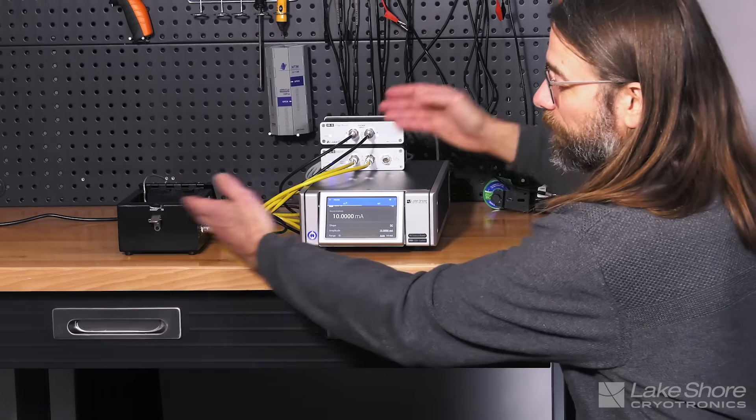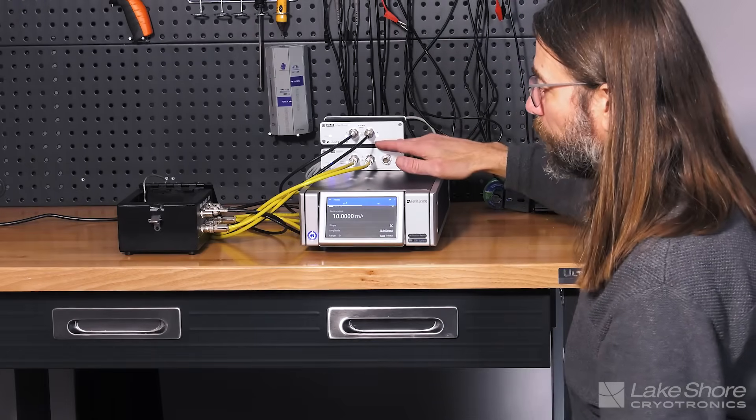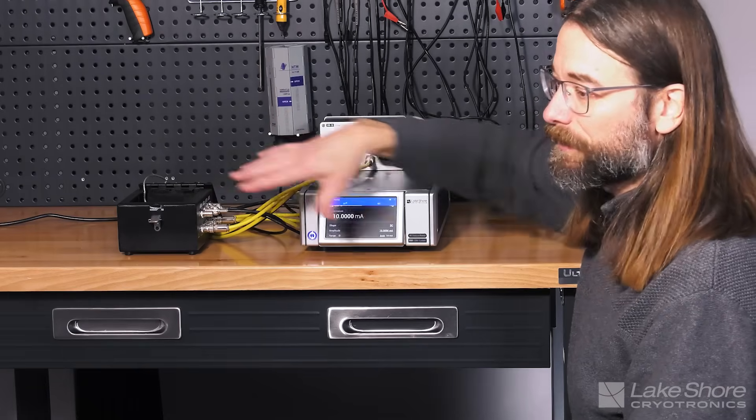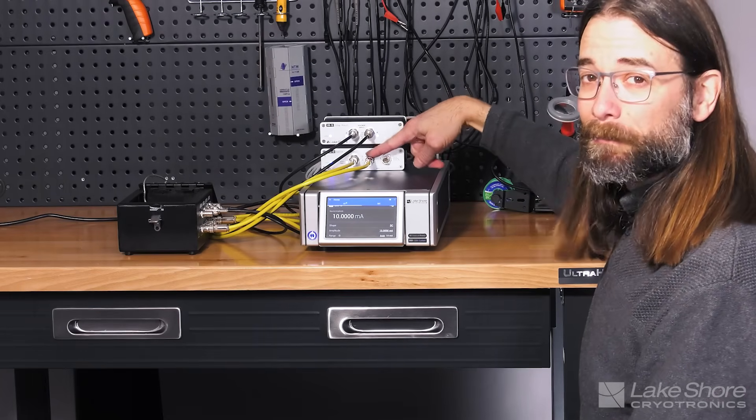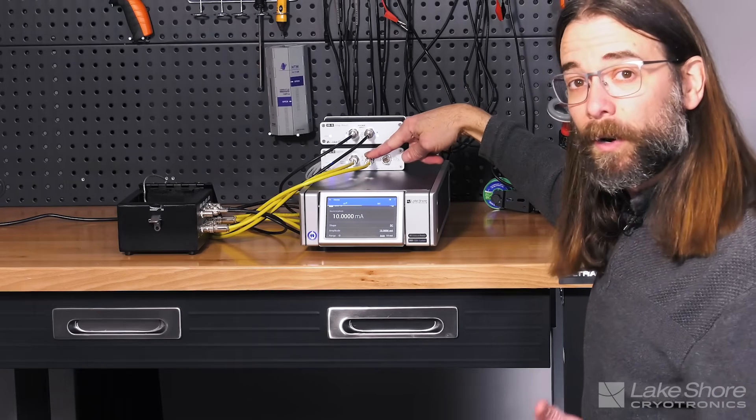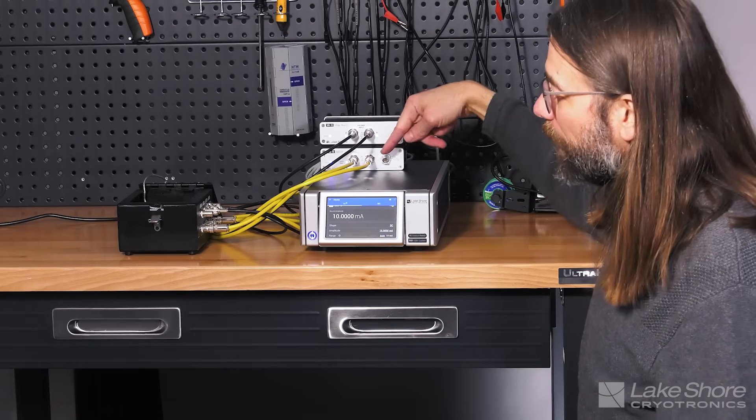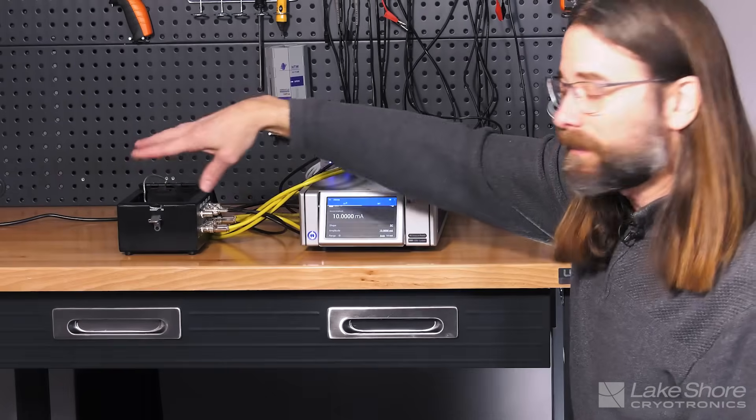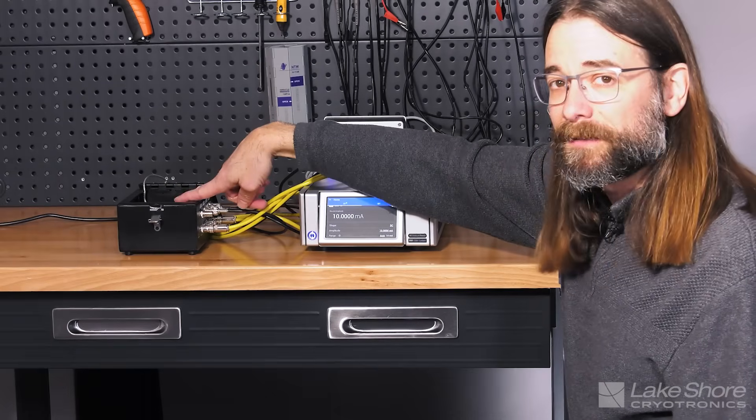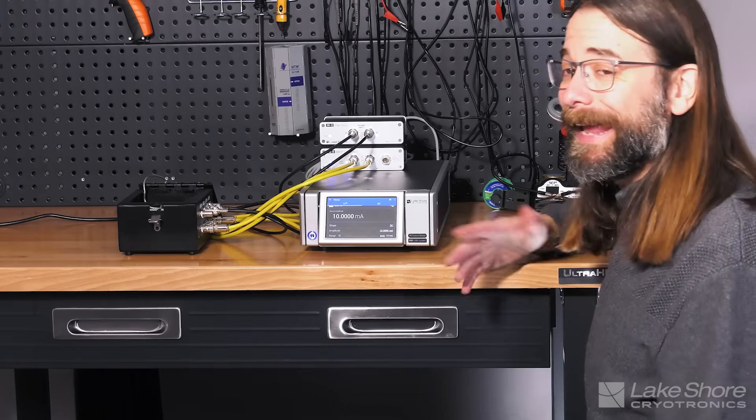So if we had really long leads separating our current source from our device under test, and we were making the measurement back here in what's typically called a two-wire measurement, if we were making our voltage measurement here at this end, we would have the voltage drop of all of that lead and contact resistance leading to the device under test in both directions. So that's going to add more error.